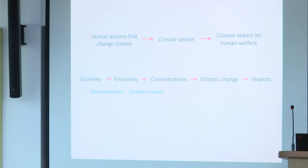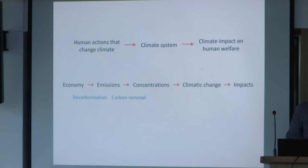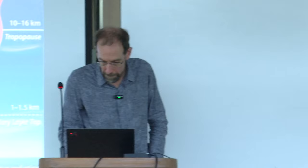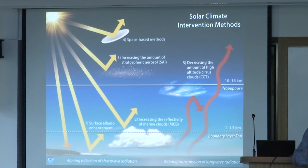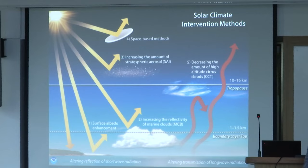Carbon removal breaks the link between historical emissions and concentrations. Solar geoengineering at best can weaken the link between CO2 concentrations and the amount of climate change — it can't break the link, but there's evidence it could weaken it substantially. When I say solar geoengineering, I'm thinking of a range of ways by which humans could deliberately intervene in the Earth system to change the radiative balance — most obviously by making the Earth more reflective, but also by making it more infrared transmissive so heat can get out better.